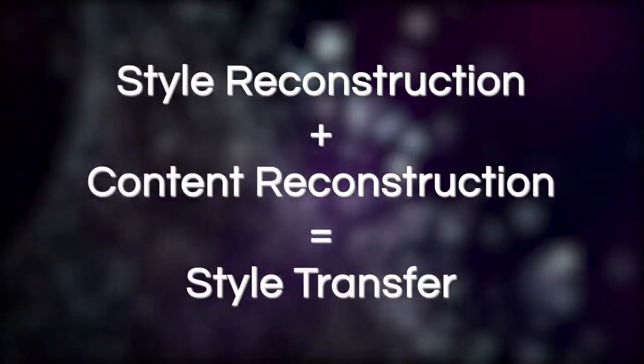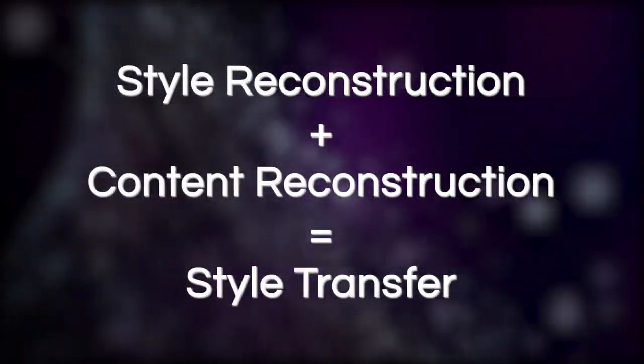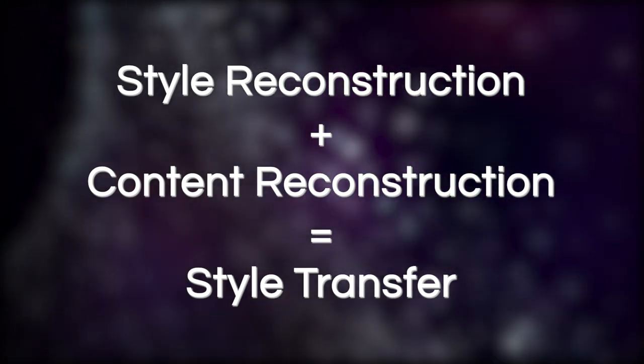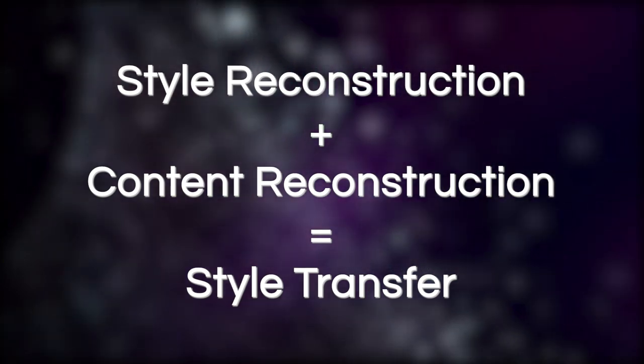Using style transfer can actually be quite trivial if you know how content and style reconstruction work. Instead of telling our network to only optimize for style or content, we can tell it to jointly consider both images, creating an image that should generate the style of one image and capture the content of the other.